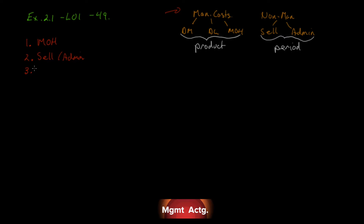Number three: salaries paid to the employees who produce the audio equipment. That's a manufacturing cost, and since they produce the audio equipment, I'm assuming this is labor that actually works on it — direct labor. Number four: cost of the glue used to fasten the company's logo to the grill on all its speakers. We buy a big tube of glue used in many applications, so we can't really trace it to every specific product. It's material, but it's indirect material — and anything indirect is overhead, so manufacturing overhead.